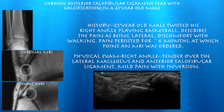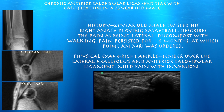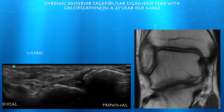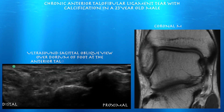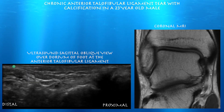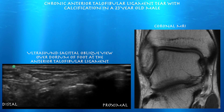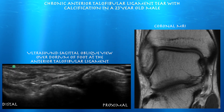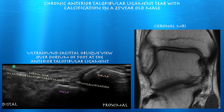His MRI shows some speckled calcification within the ligament itself. On ultrasound, with the probe positioned over the anterior talofibular ligament, you can see that calcification, and above the calcification there is hypoechoic signal consistent with a chronic partial tear.